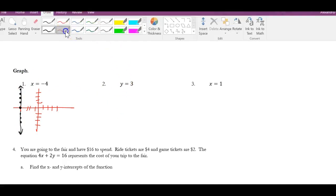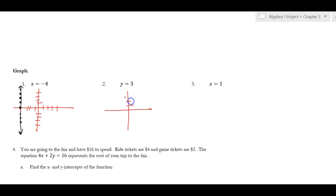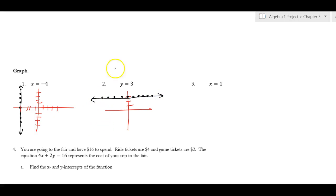Next example: y = 3. I go right up to where y is three, and everywhere I go y continues to be three — on the right and on the left — so it is a horizontal line. Then x = 1: everywhere I go x is one, so I keep going up at x equals one, and this is a vertical line.